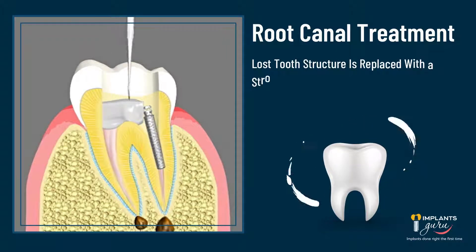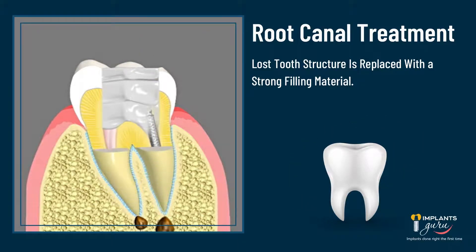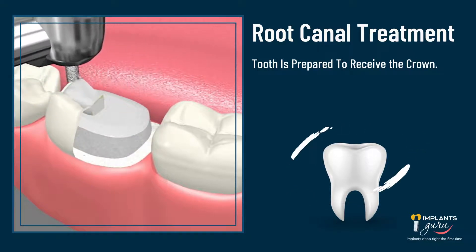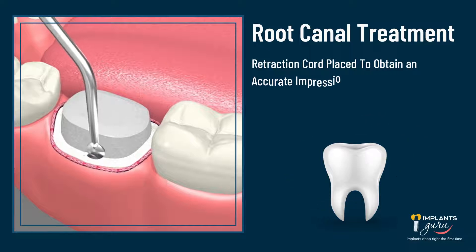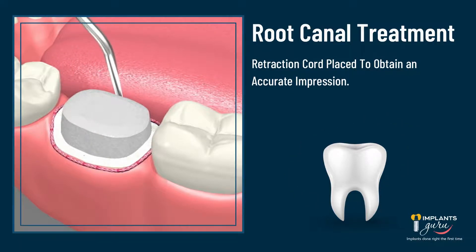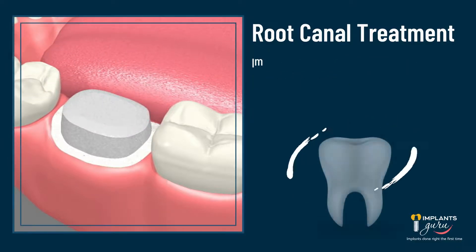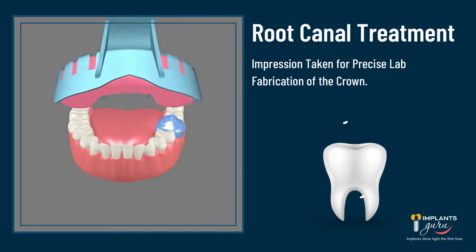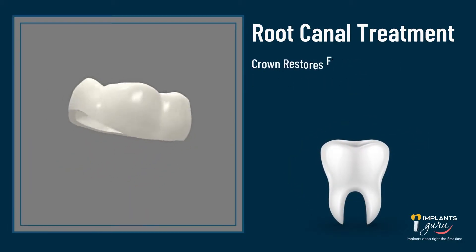Lost tooth structure is replaced with a strong filling material. The tooth is prepared to receive the crown. An impression is taken for precise lab fabrication of the crown, which ultimately restores the form and function of your tooth.